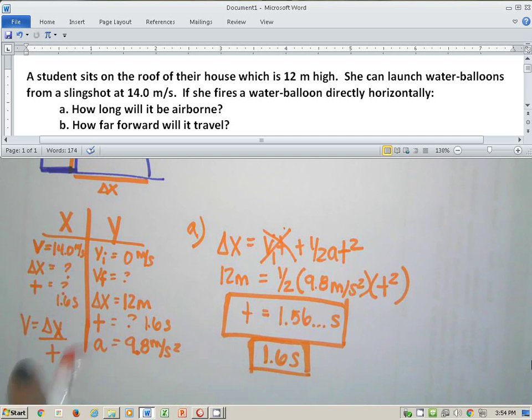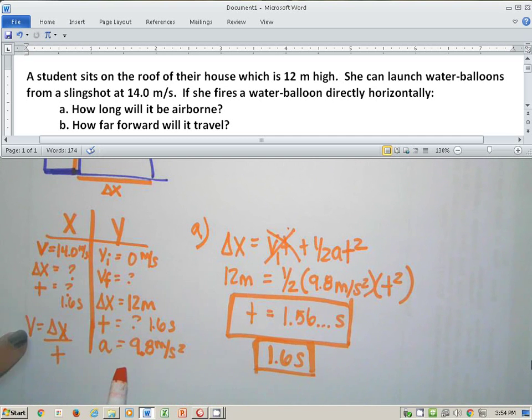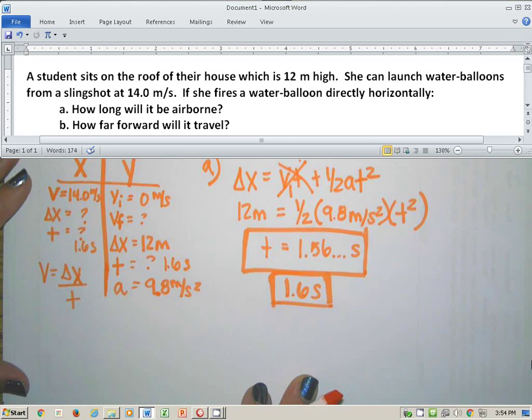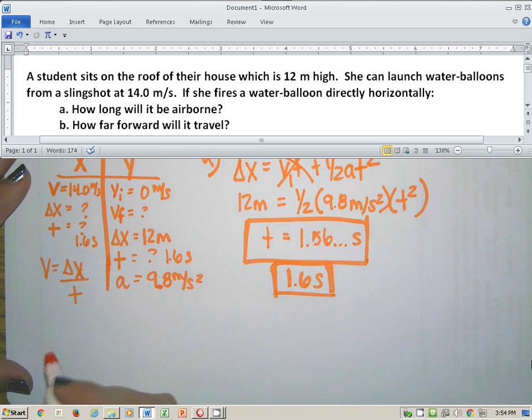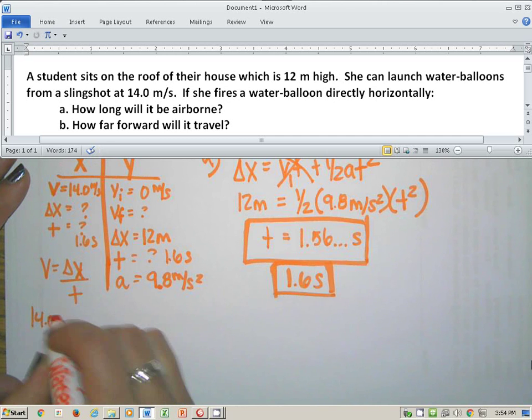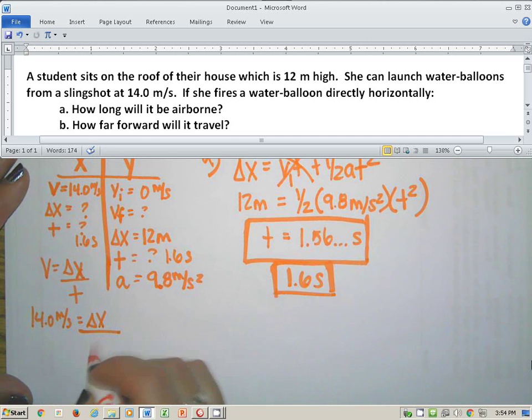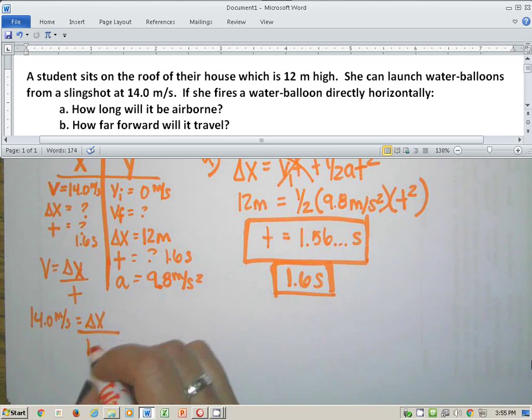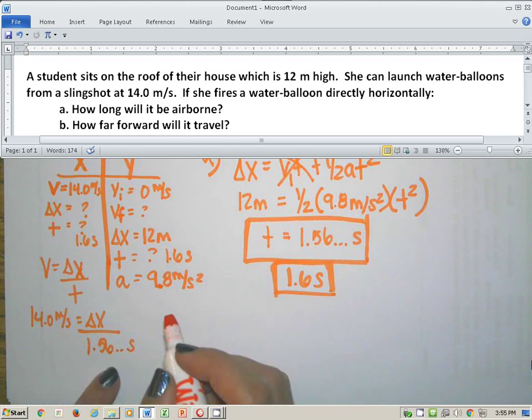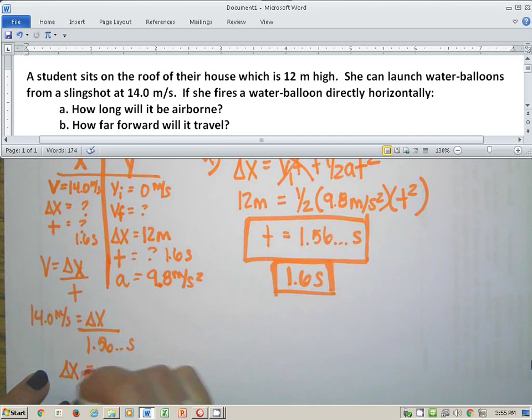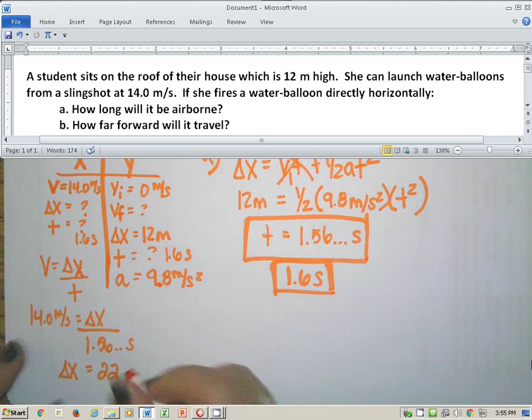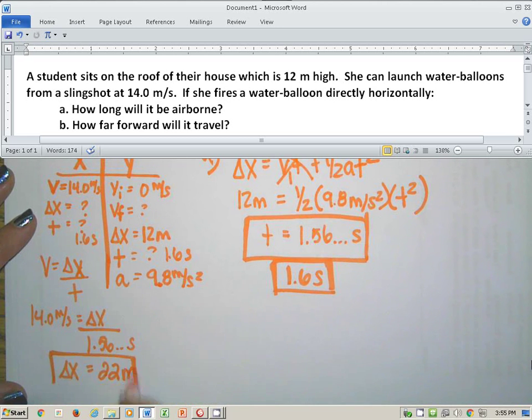Now that I have this on this side, I have V, I have T, I can now plug this in to V is equal to delta X over T. And I'm just going to work underneath it. 14.0 meters per second is equal to something over 1 point. Now I tell my classes, I would prefer you plug in this whole number over here, the 1.56 that you store it in your calculator and keep all of that in there. You're going to come up with a delta X value of 22 with proper sig figs, 22 meters.